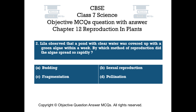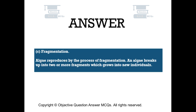The right answer is Option C — Fragmentation. Algae reproduces by the process of fragmentation. An algae breaks up into two or more fragments which grow into new individuals.